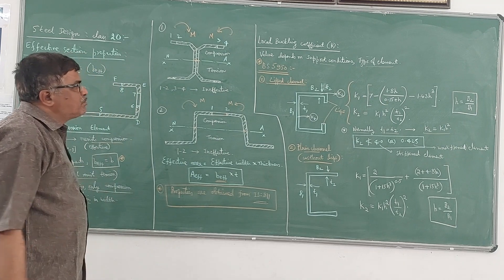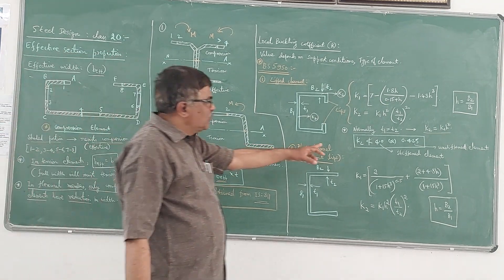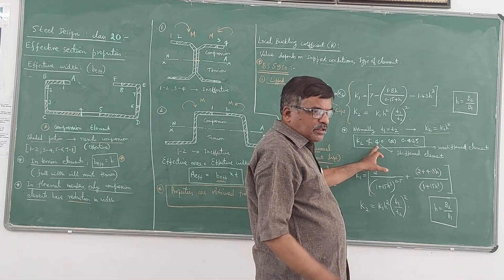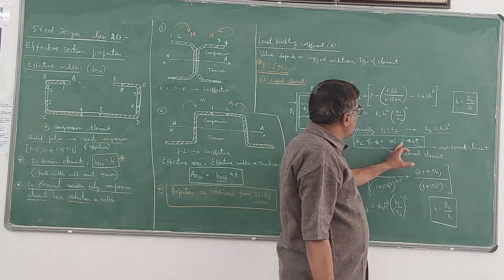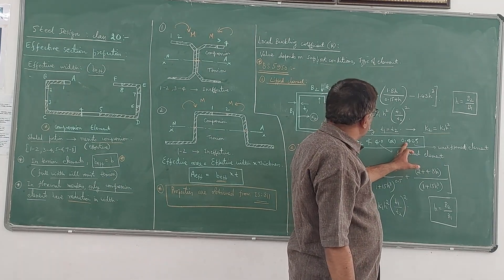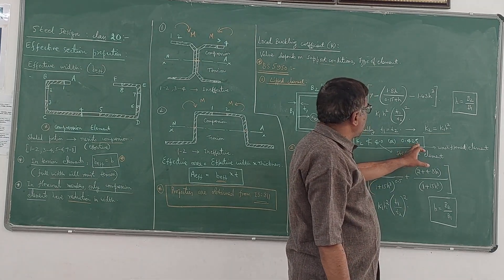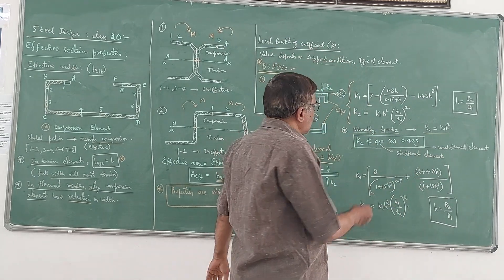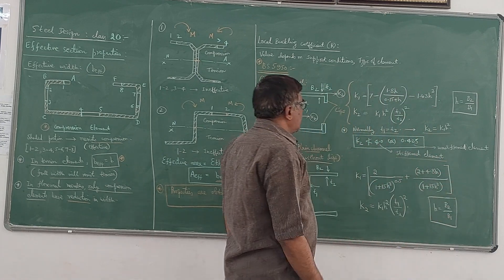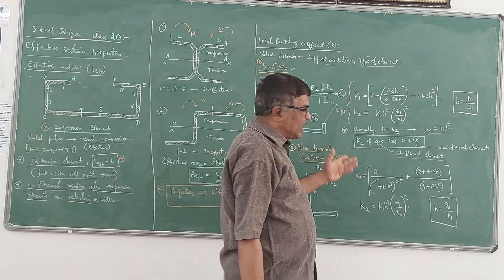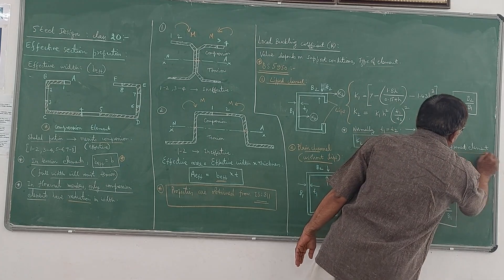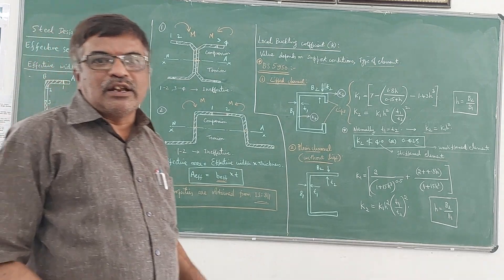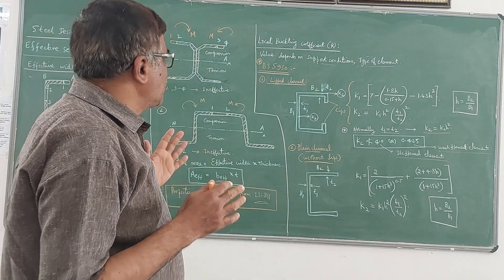For a lipped channel, the value of K2 should not be less than 4, and should not be less than 0.425, depending on the case. For a stiffened element, K is normally taken as 4, and for an unstiffened element it is taken as 0.425. That is the range and limit of K2.